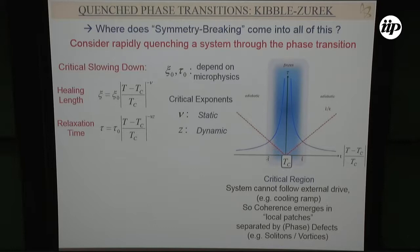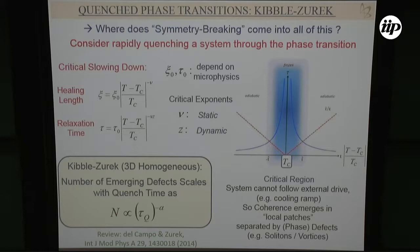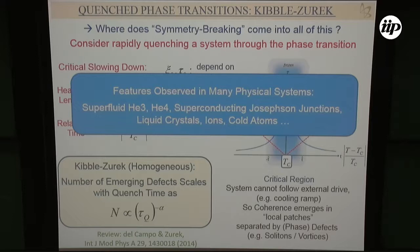This is a simplified form of the Kibble-Zurek phenomenon. The number of defects that form between all these patches scales as a function of your quench timescale with an inverse power law, alpha, which depends on dynamic and static critical exponents, the dimensionality, and the geometry of the system. This has been observed in many systems — I recommend Adolfo's review if you want to find out more.